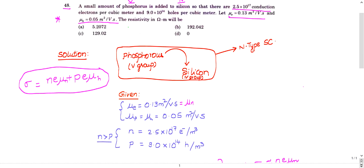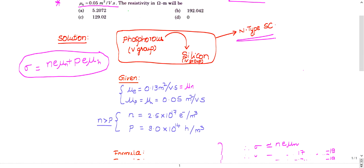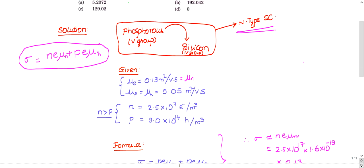Phosphorus is added to silicon, which forms an n-type semiconductor - that's the first point to observe. Then write down the given information: mobility of electrons and holes are given.